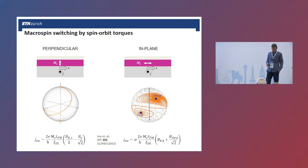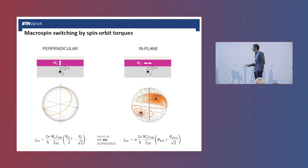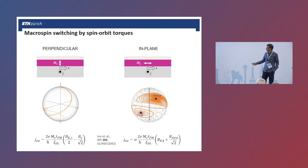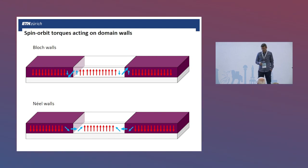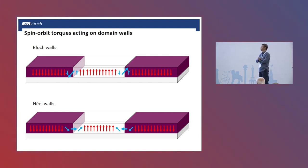It's easy to understand spin-orbit torque switching in a macrospin picture, both for perpendicular and in-plane magnetized systems. For perpendicular systems, one also needs an in-plane magnetic field parallel to the current to break the symmetry of the damping-like spin-orbit torque. However, macrospin switching is not what we observe in general — we need very small magnetic systems to preserve macrospin behavior. In general, we have to deal with nucleation and propagation of domain walls, and here is where spin textures become important.